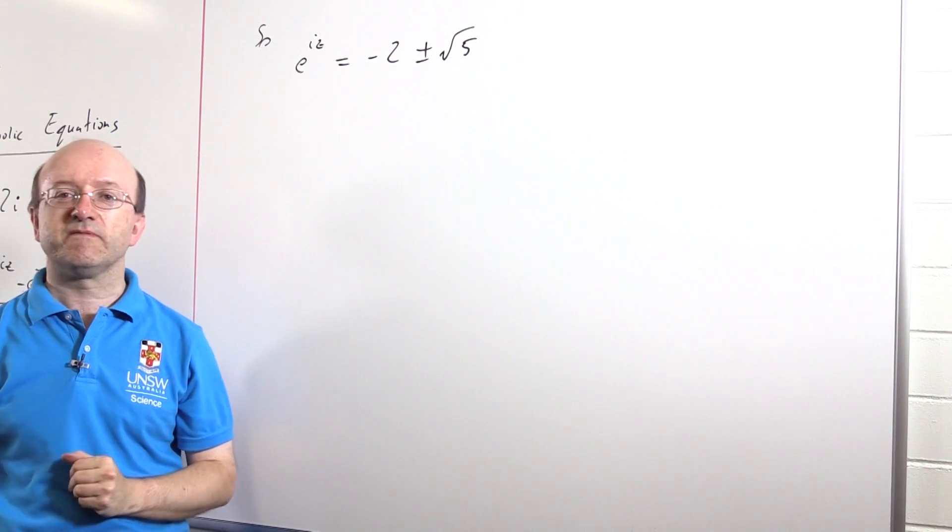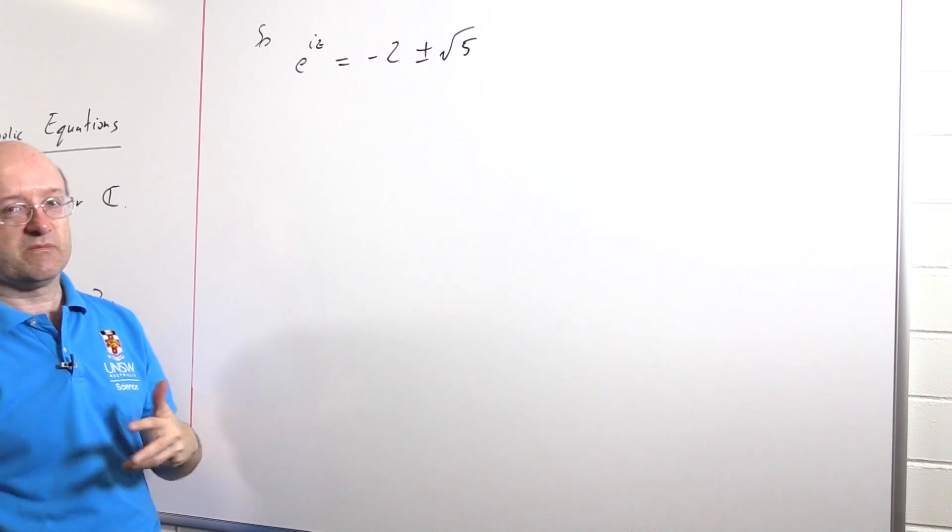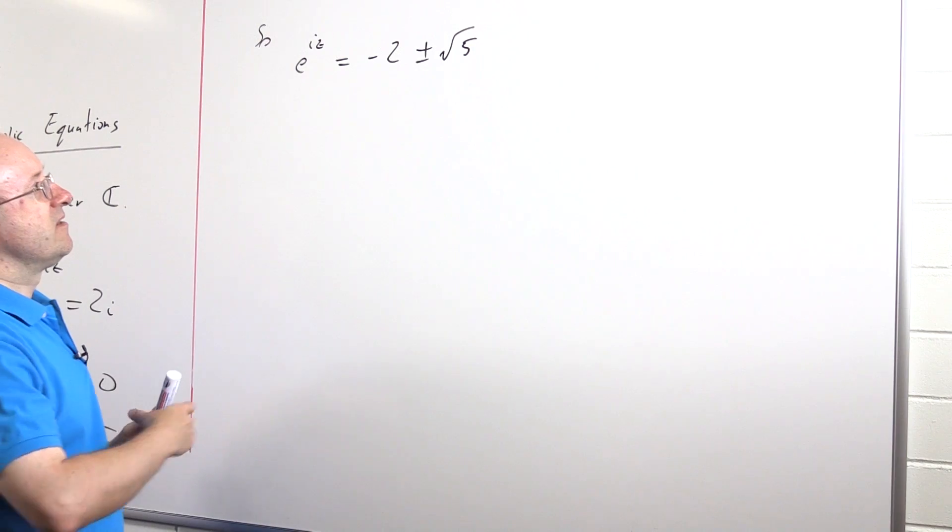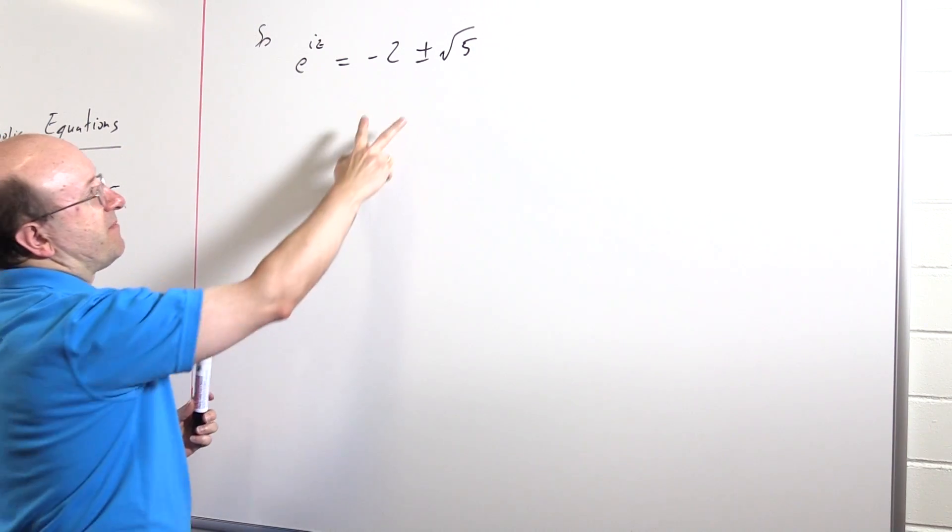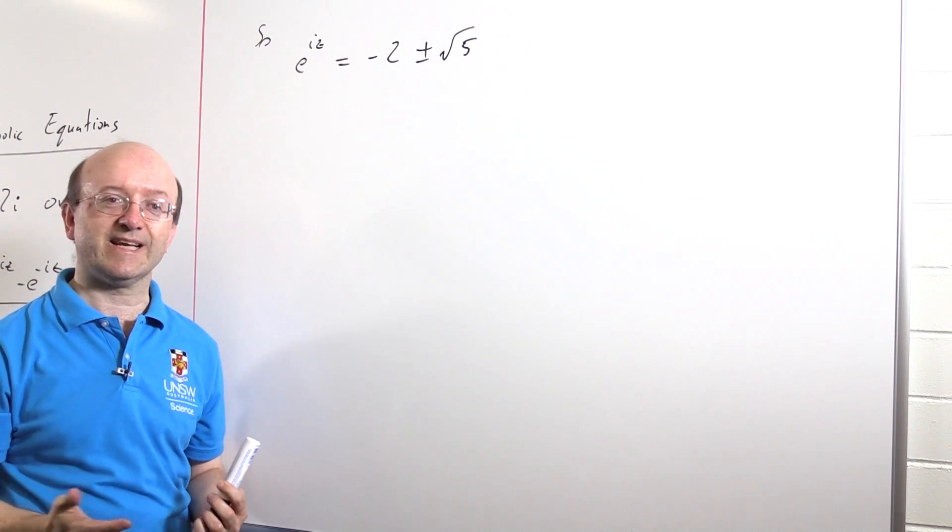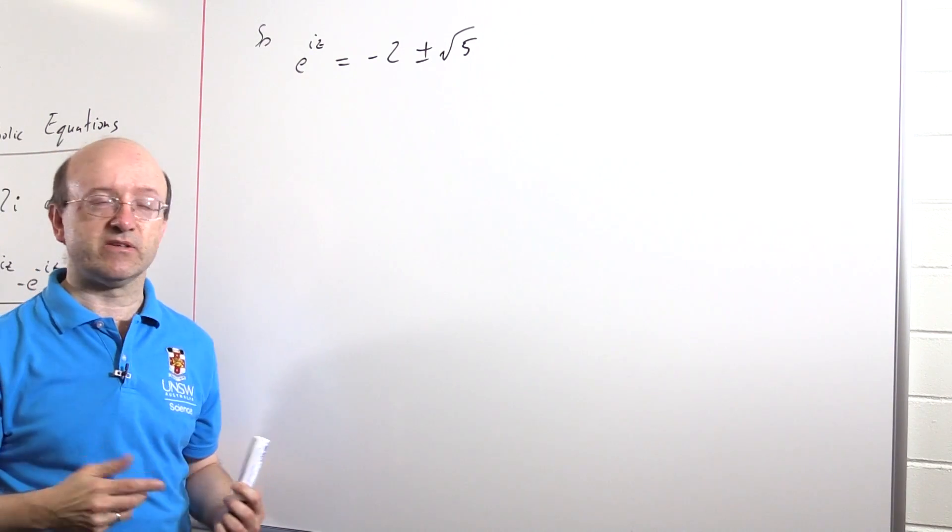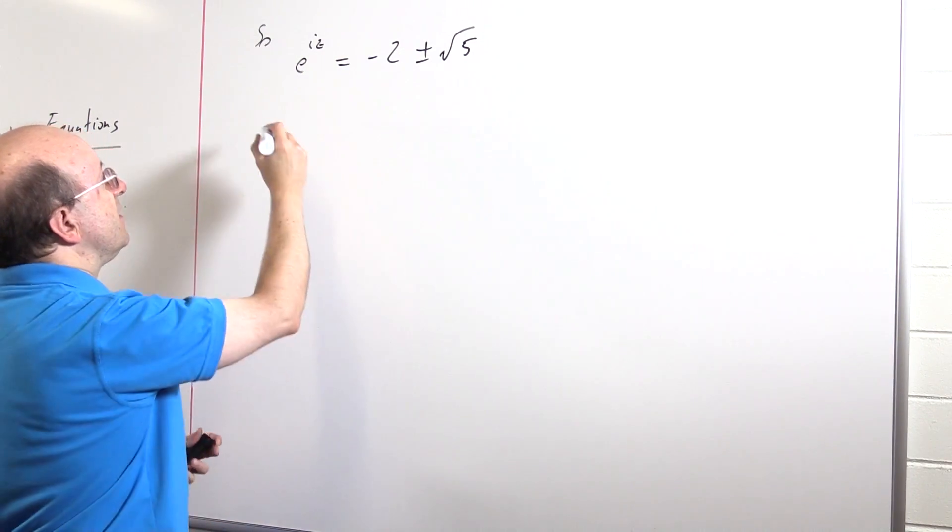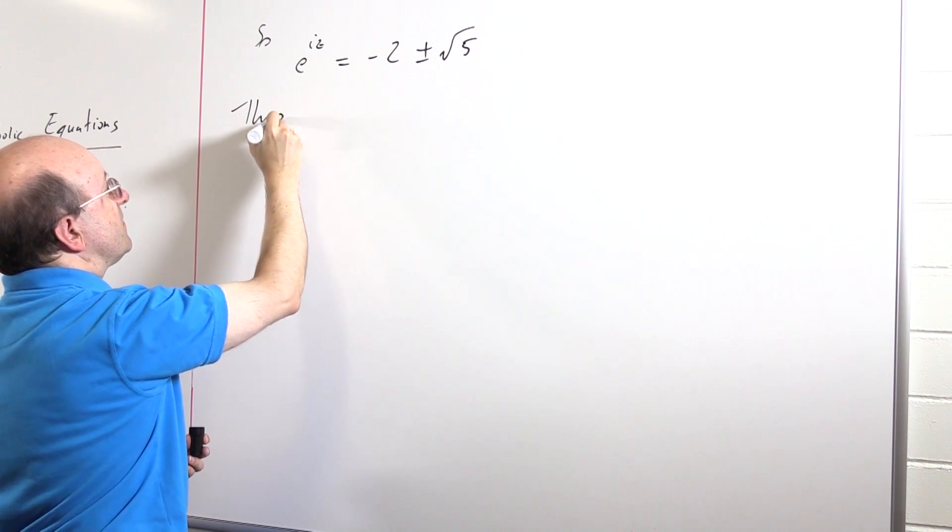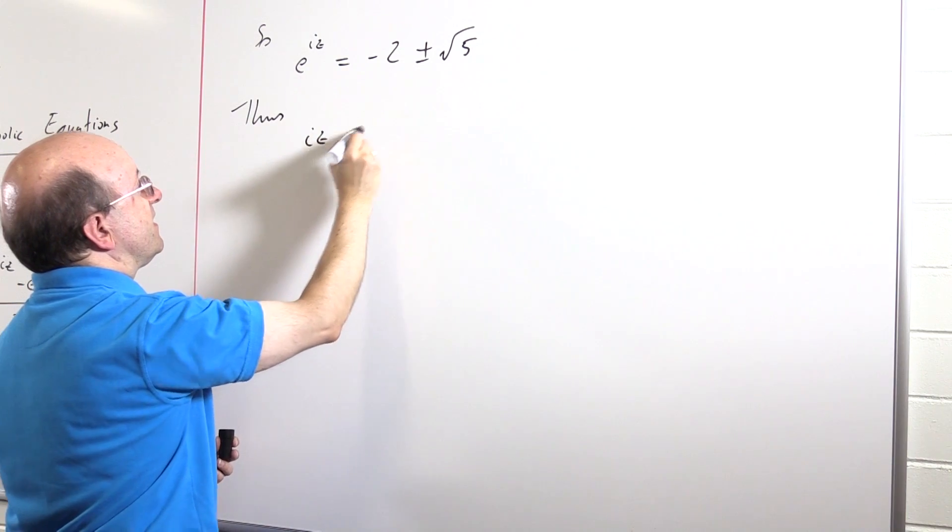Now we have to find z from this, which is a matter of taking complex logarithms, it's something you have to know anyway. Well what we have to worry about is whether minus 2 plus or minus root 5 is positive or negative because that will tell us something about its argument. And we're going to get two different cases here.